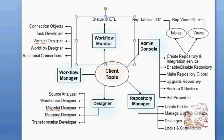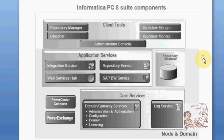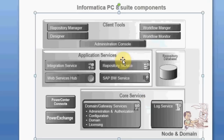This is the total architecture of Informatica. First we prepare core services during installation, then application services — this is the admin part — and finally client tools. There are two types of jobs in Informatica ETL: application service administration job and client tools, which is the developer role job.